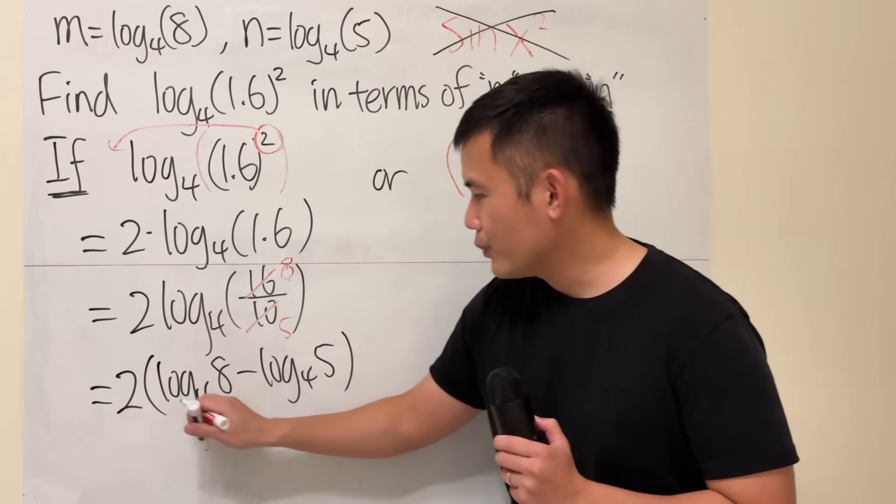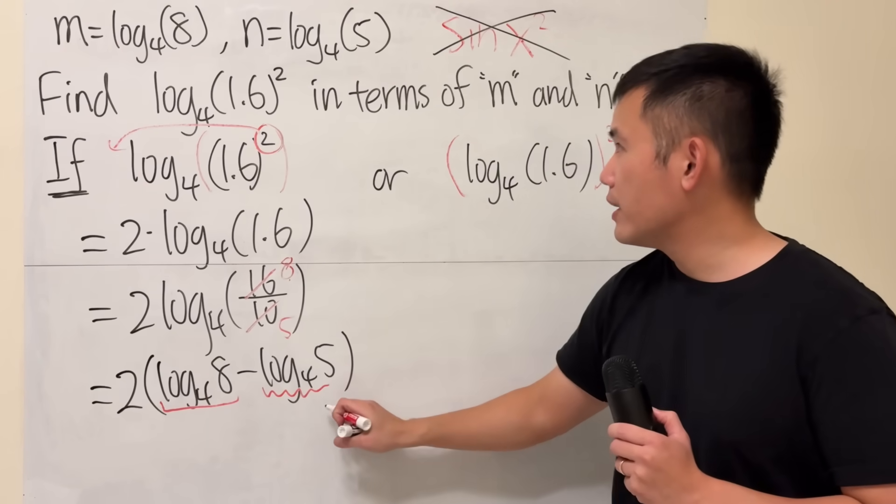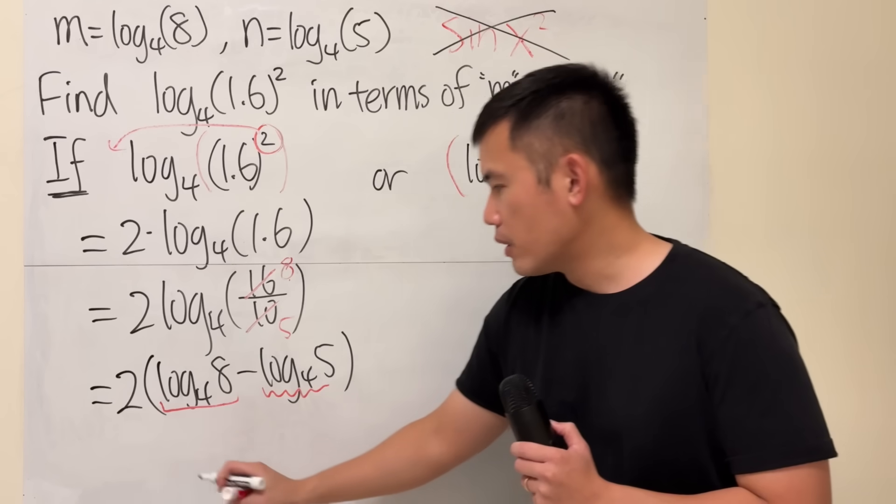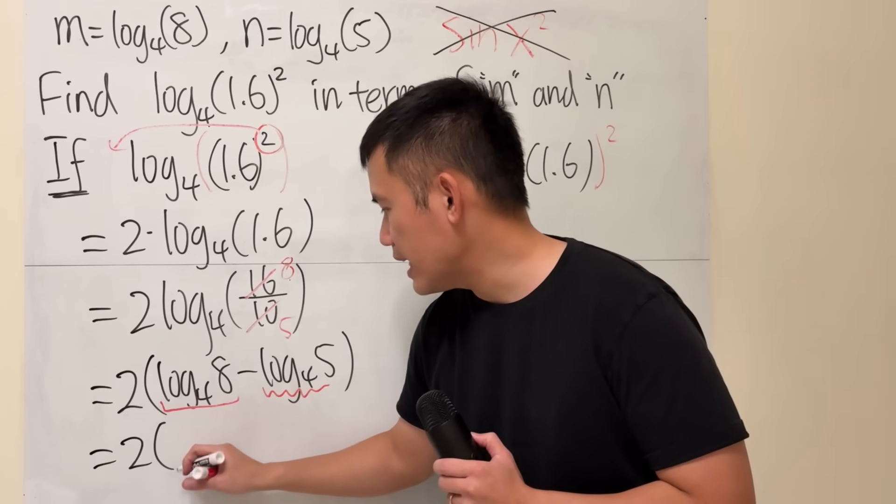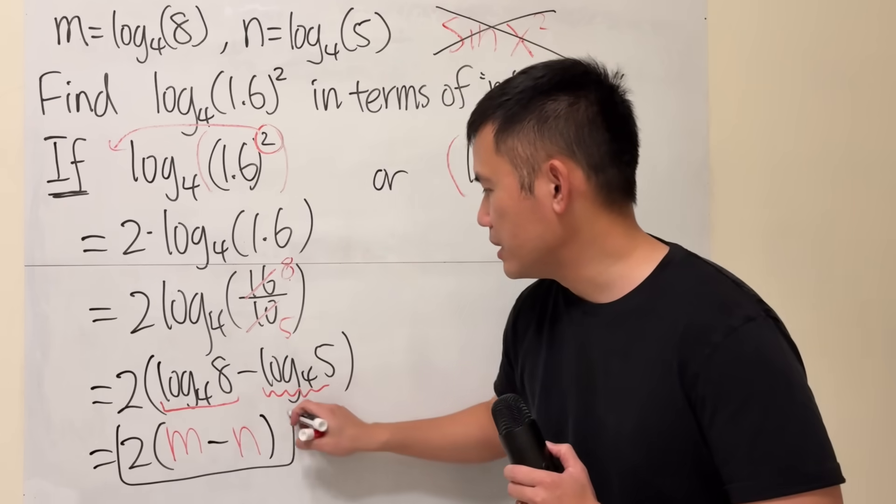And now we see that this is given to be m and this is given to be n. Therefore, we will just have 2 times m minus n, and this is meant to be the answer.